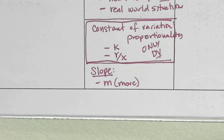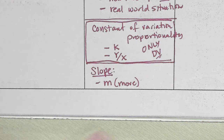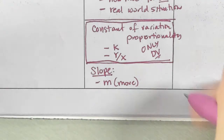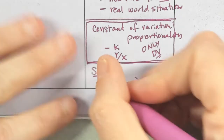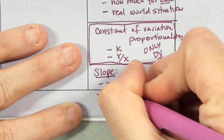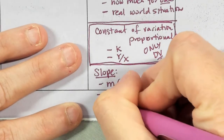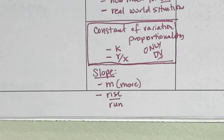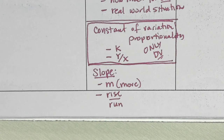I start at a point and the slope tells me how much I go up and how much I go right, or how much I go down — it tells me how I move to get to the next point. And we're going to learn today about rise over run. That's what we're going to focus on — rise over run, our final form.